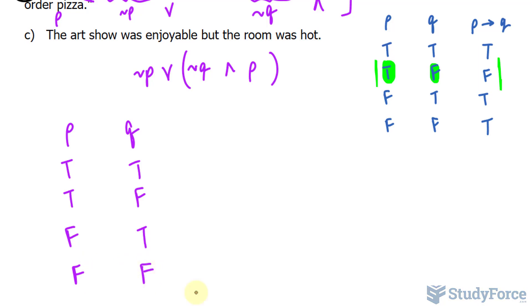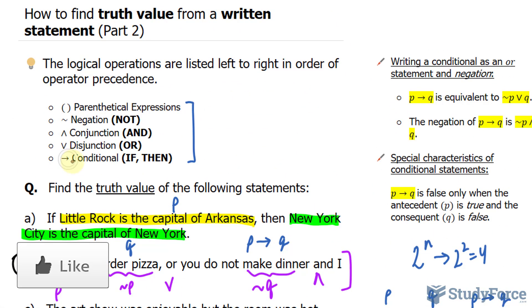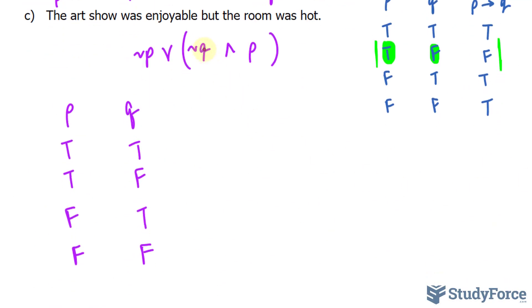The next column in our table, we have to focus on the parentheses. Notice the order is parentheses and the last thing you work on is the arrow symbol for conditional statements. So if we look within the parentheses, we have tilde Q and P. Within that, tilde Q comes next.